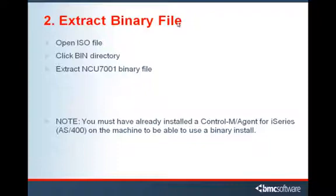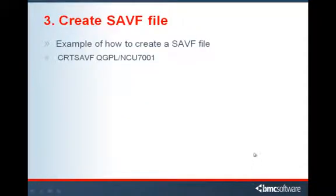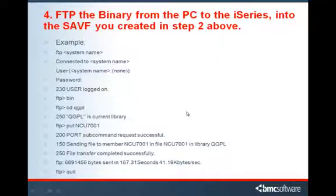Extract this file. Let's create the save file on the I-Series. Here's an example of a command you can run on the I-Series to create the save file. Now we need to FTP the binary from your PC to the I-Series into the save file you created in step 2. Here's an example of how to FTP that file.